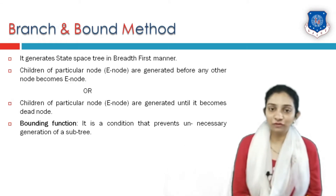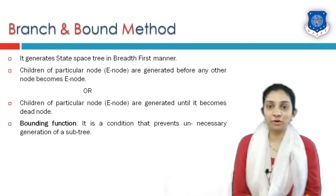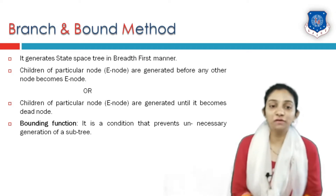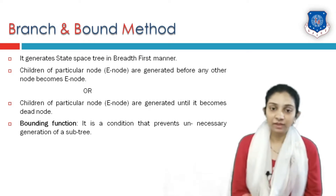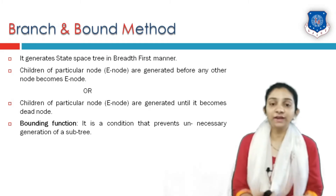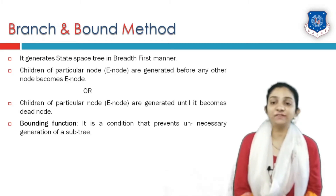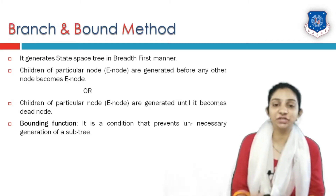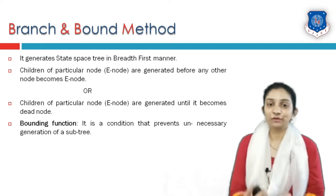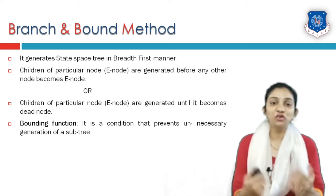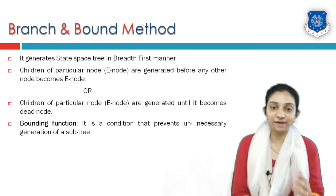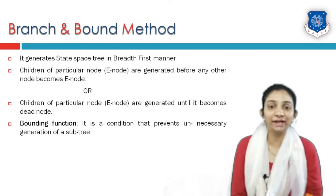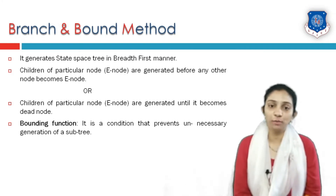In branch and bound method we also make use of a bounding condition or bounding function. It is a function or condition which prevents unnecessary generation of subtrees. So in branch and bound we also dead-end some nodes so that they won't generate unnecessary solutions to a problem.